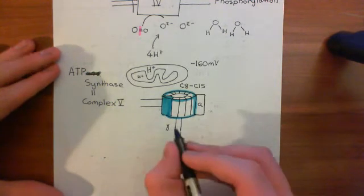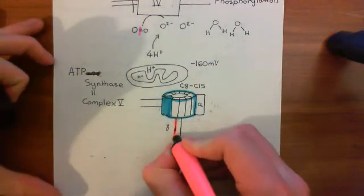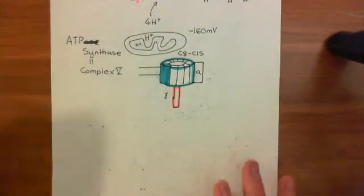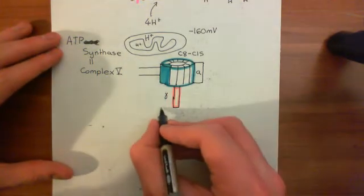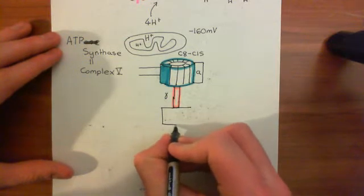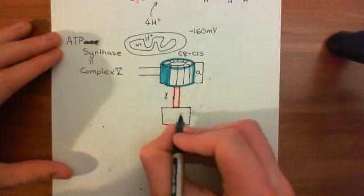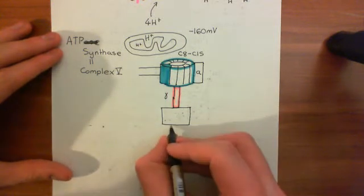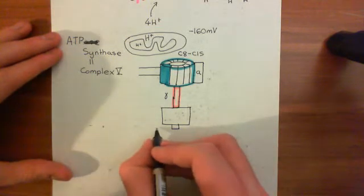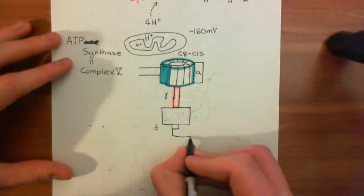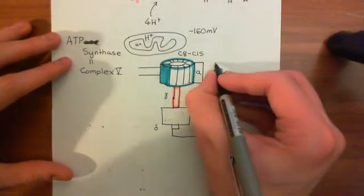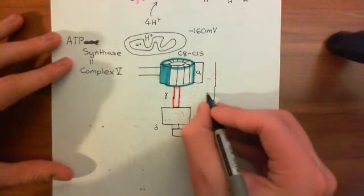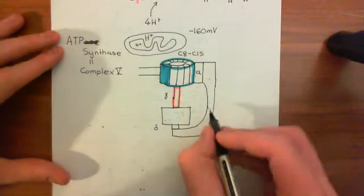This portion here is called gamma. Gamma is basically a pole that extends between the tube — which is the pore through which the protons move — and the portion that actually synthesises the ATP. Down here there is a fantastic circular disk containing six separate proteins. And then sitting on top of this is a portion known as the delta portion. There is also a final portion known as B2, which extends all the way from the A portion up to the top of the delta portion.